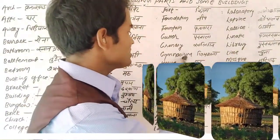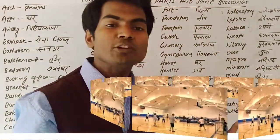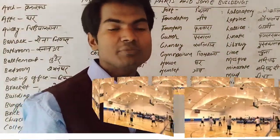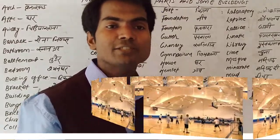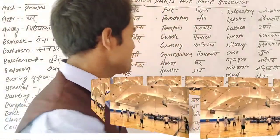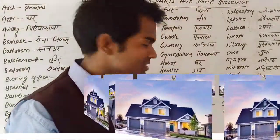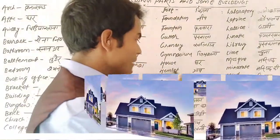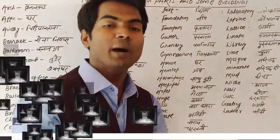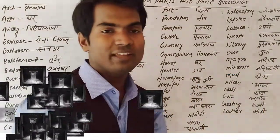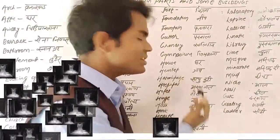Gymnasium — gymnasium ka matlab hota hai 'gym sala,' jahan pe log exercise karte hain. House — it is a common word, house means 'ghar.' Hamlet — hamlet ka matlab aap ise 'gaon' bolein, village bhi keh sakte hain.